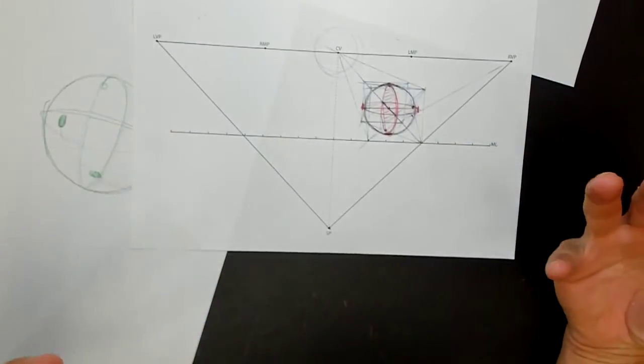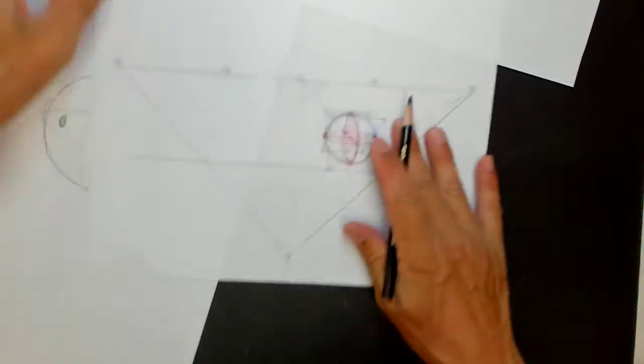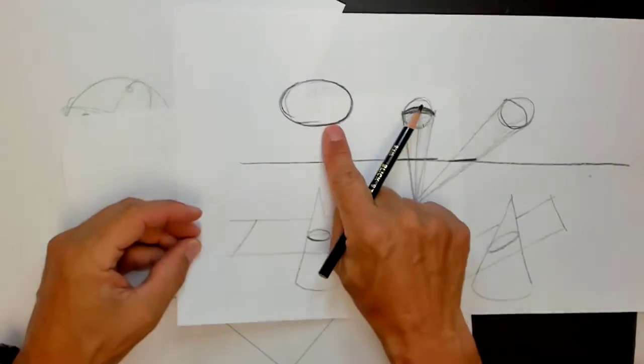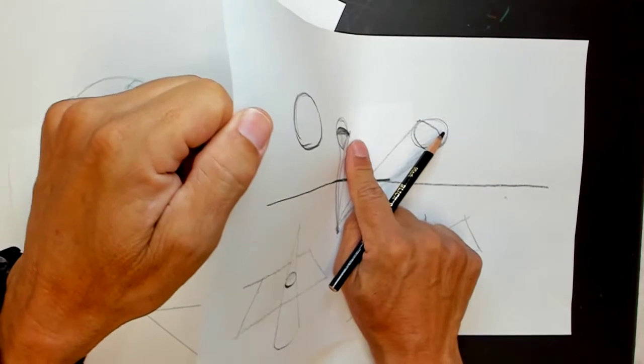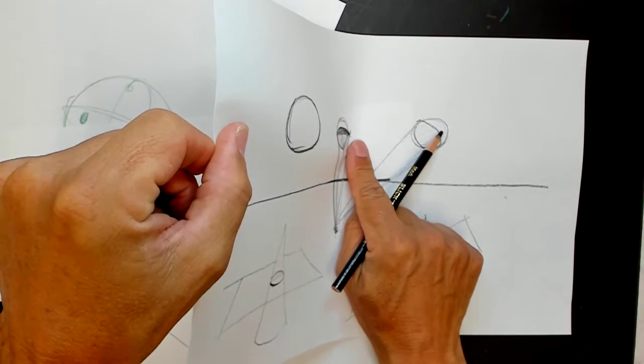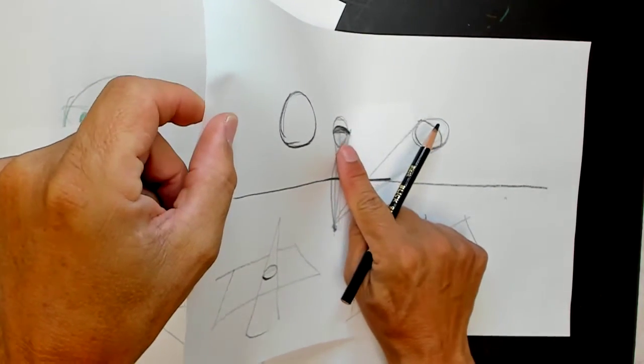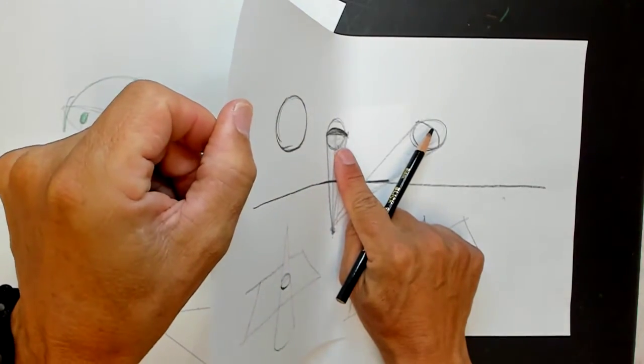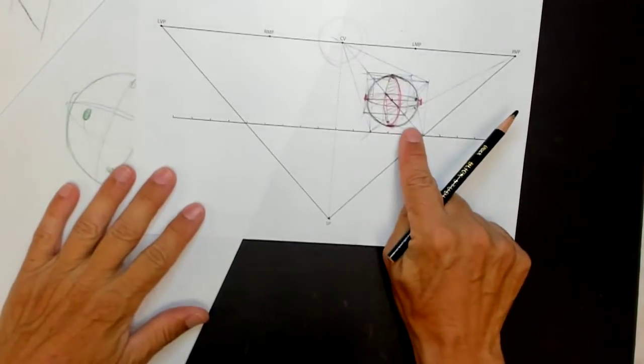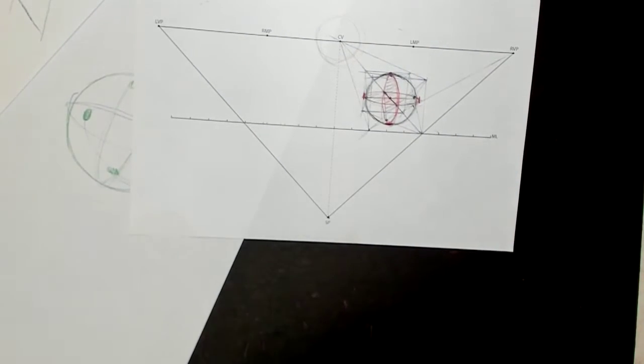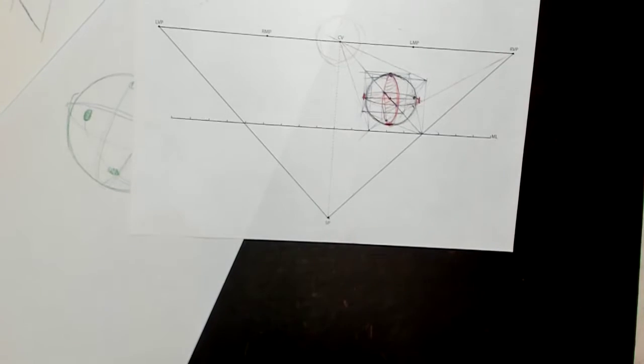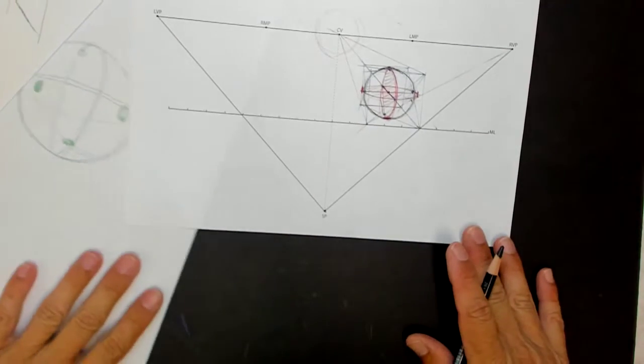But if you stand someplace else and look at it, it looks like this. And if there's a way that you can make your drawing perfect, like make the viewer only look at your drawing from exactly where you plotted it out, then this guy would look like a perfect circle to that person. But since we really can't do that, well you can do that but that's like a whole other thing.